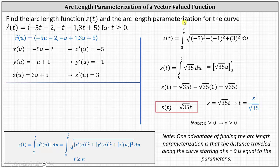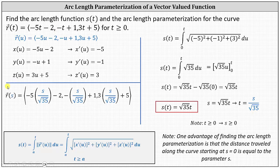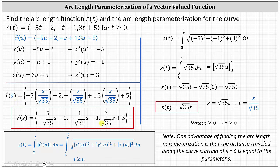To find R of s, the arc length parametrization, we substitute S divided by square root of 35 for t in each component. This gives R of s where the x component is negative 5 times S over square root of 35 minus 2, the y component is the opposite of S over square root of 35 plus 1, and the z component is 3 times S over square root of 35 plus 5. Simplifying, we write the arc length parametrization R of s in its final simplified form.